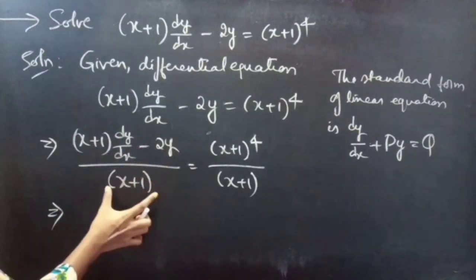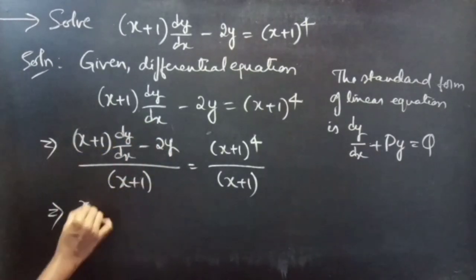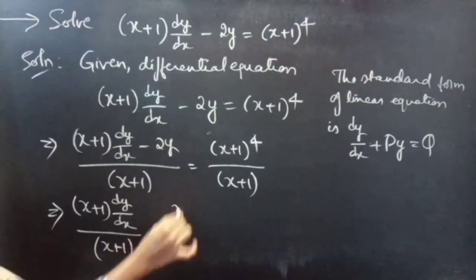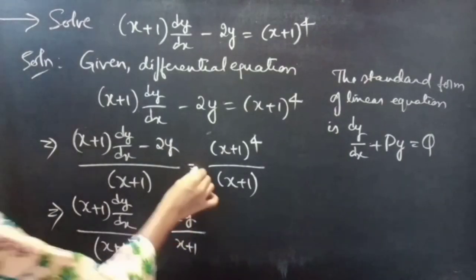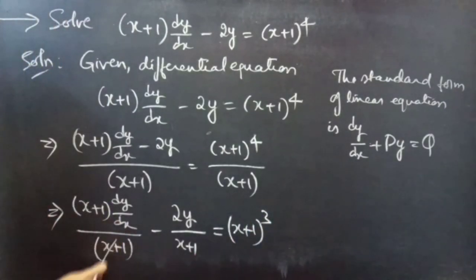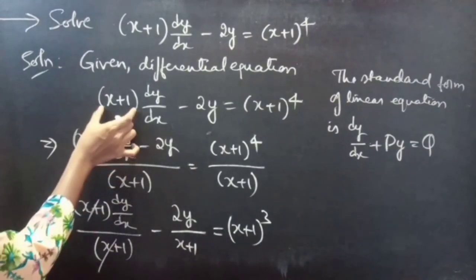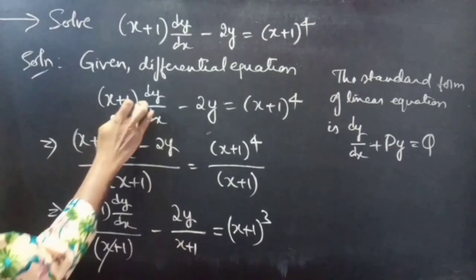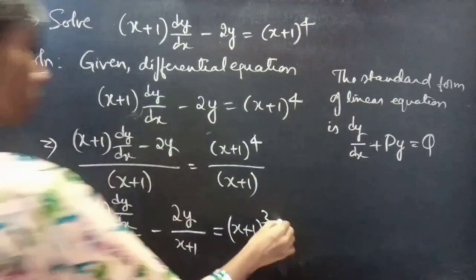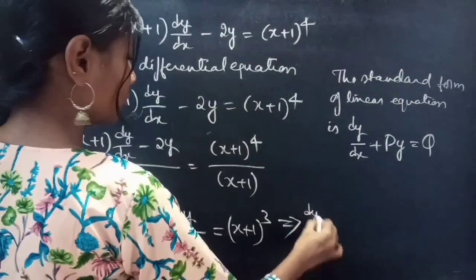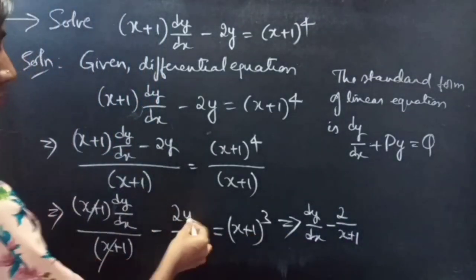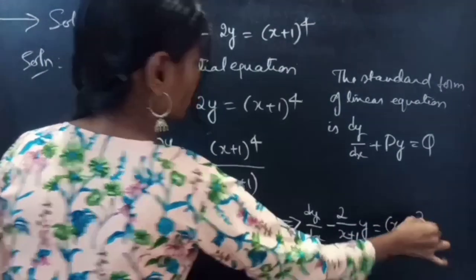In the LHS part, you are having 2 terms in the numerator and 1 term in the denominator, so we can split this into 2 terms: (x+1)·dy/dx divided by (x+1), minus 2y/(x+1), equals (x+1)^3. Here (x+1) gets cancelled, so we have eliminated (x+1) from the first term. Now, you will get the coefficient of dy/dx as 1. Then: dy/dx minus 2/(x+1)·y equals (x+1)^3.